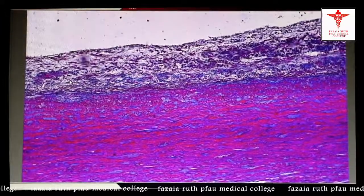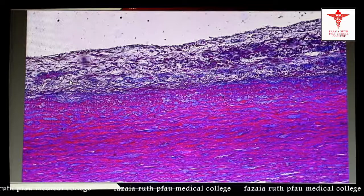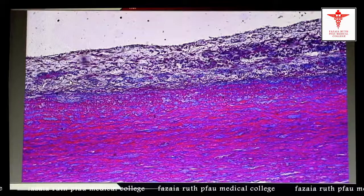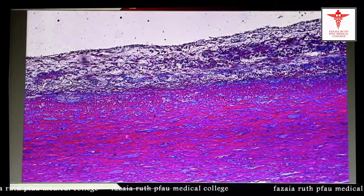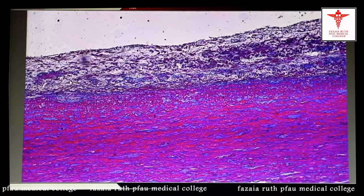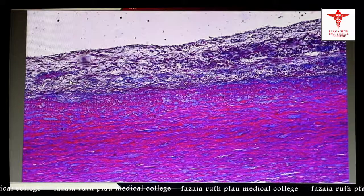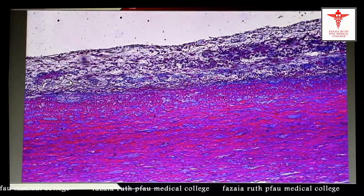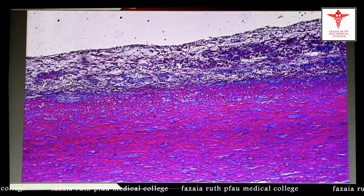Here is a magnified picture of the elastic artery. Focusing on the tunica media, we can see it is richly filled with elastic fibers, and we cannot appreciate the internal elastic lamina separating the tunica intima from the media. Moving further to the exterior, we also cannot appreciate the external elastic lamina. These are the identifying features of the elastic artery: no internal elastic lamina, abundant elastic fibers in the tunica media, and no appreciable external elastic lamina.